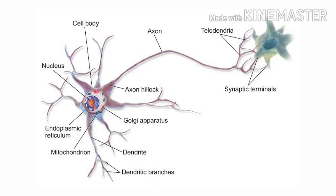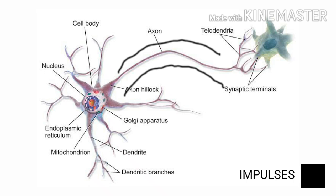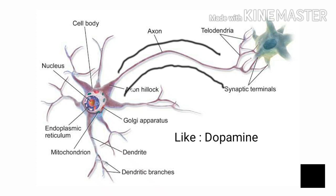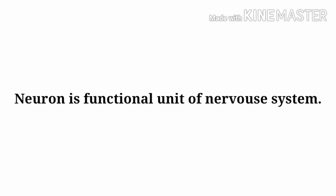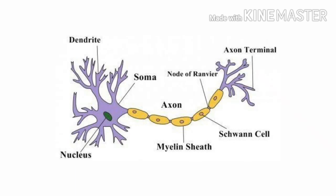A neuron is a cell which is responsible for the generation and transmission of neural impulses, or we can say action potentials. It is also sometimes responsible for the production of neurotransmitters, and sometimes for detecting internal and external stimuli. It is the structural and functional unit of the nervous system, comprising the axon, dendrites, and the cell body.